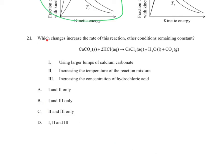Question 21 asks which changes increase the rate of reaction between calcium carbonate and acid. Using larger lumps reduces surface area, slowing the reaction down — we want increased surface area for solids. Increasing temperature always increases reaction rate. Increasing concentration gives more chance of collisions and therefore more successful collisions. Both increasing temperature and increasing concentration increase the rate, giving answer C.